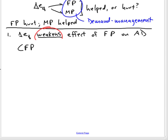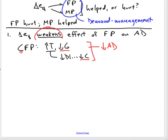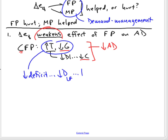Contractionary fiscal policy — raise taxes, cut government spending. The tax increase lowers disposable income and lowers consumption. So by lowering G and lowering consumption, we're trying to lower aggregate demand. But what's the international effect? By lowering the deficit, we lower the demand for loanable funds, which will lower interest rates in the U.S., all other things being equal. That will lower foreign demand for dollars — people in other countries will be less interested in holding U.S. assets — and that will push down the exchange value of the dollar.